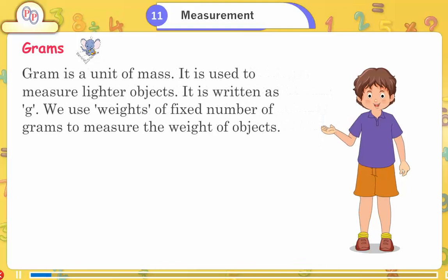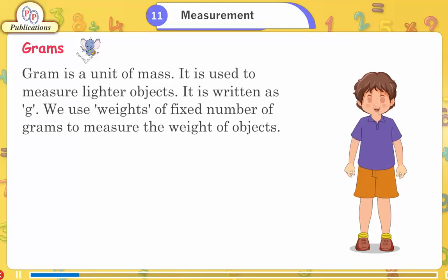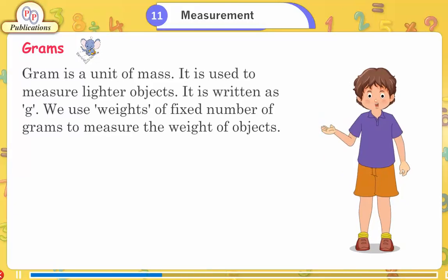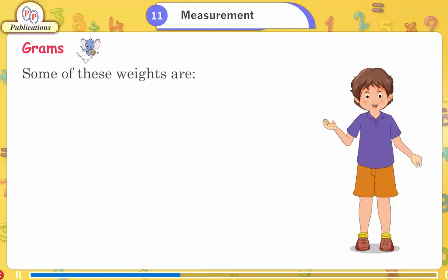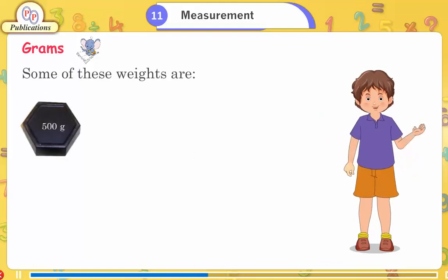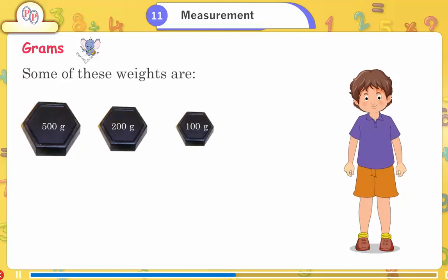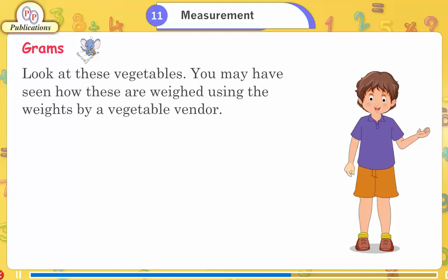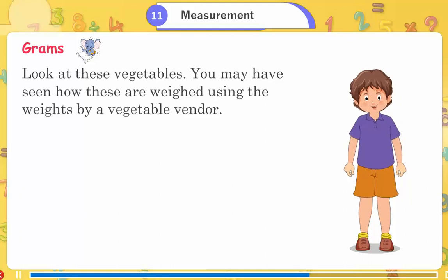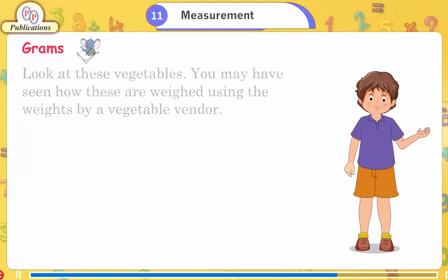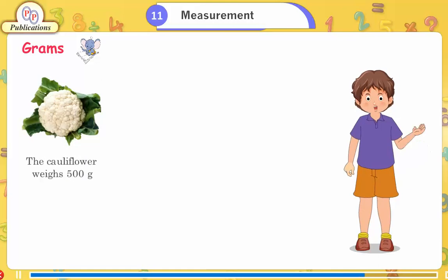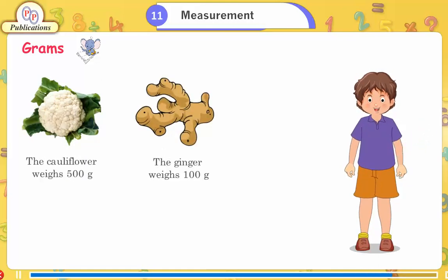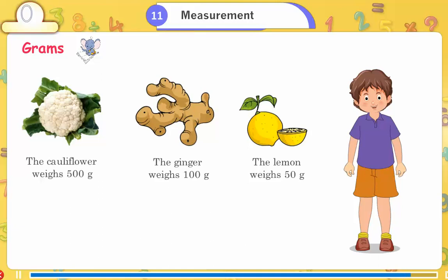Grams is a unit of mass used to measure lighter objects, written as g. We use weights of fixed number of grams to measure objects. Some weights are 500 g, 200 g, 100 g, and 50 g. A vegetable vendor uses these to weigh vegetables: the cauliflower weighs 500 g, ginger weighs 100 g, and a lemon weighs 50 g.